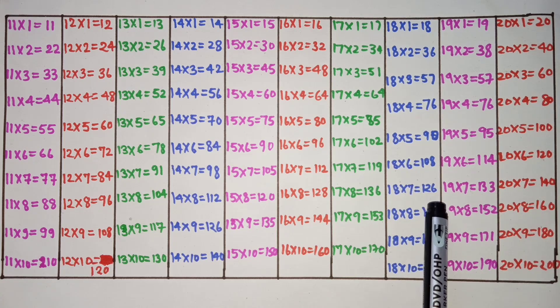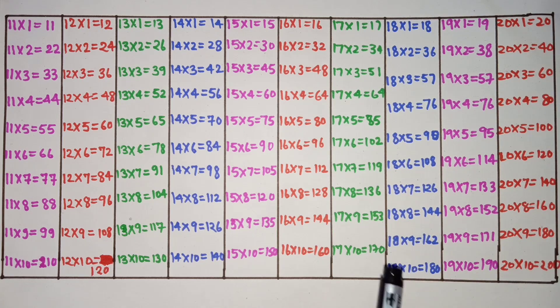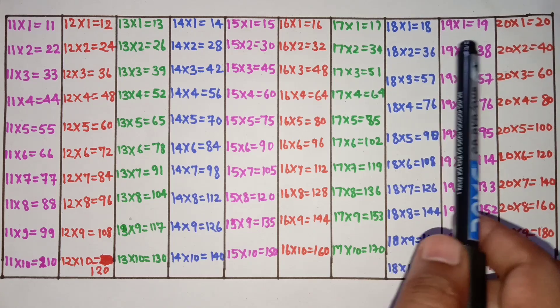18 sixes are 108, 18 sevens are 126, 18 eights are 144, 18 nines are 162, 18 tens are 180.